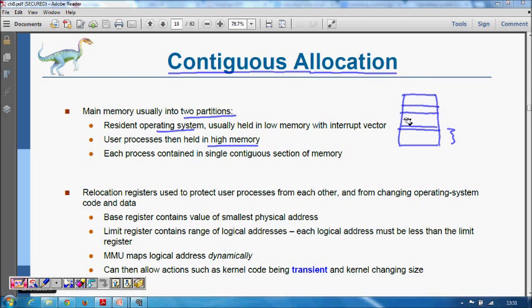Relocation registers are used to protect user processes from each other. Each process has a base address and a limit address. The limit register contains the range of logical addresses - how much maximum each process will occupy in memory. The base register tells from where the location of that process is starting, and the MMU maps logical addresses dynamically.